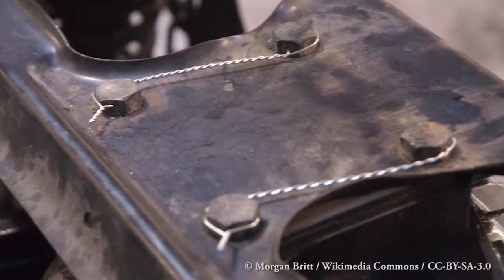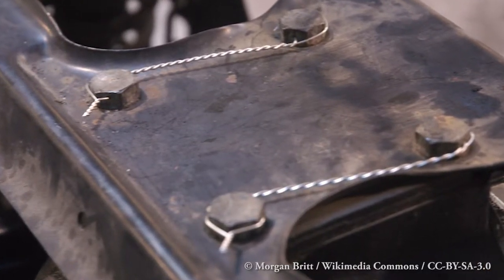For this reason, threaded fasteners are typically wirelocked in aircraft applications. Wirelocking is a process whereby a wire interlocks adjacent fasteners in such a way that loosening of one fastener would result in tightening of the adjacent fasteners.